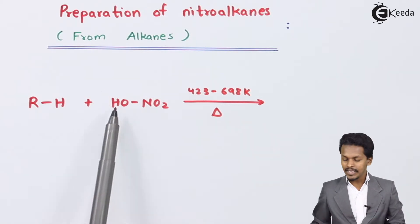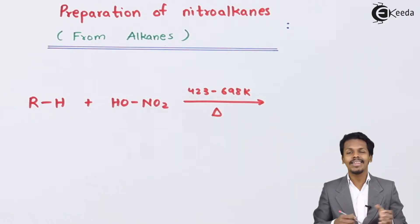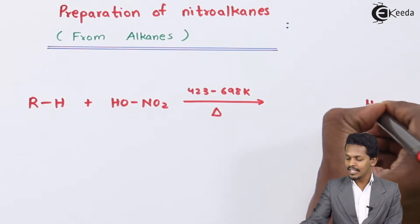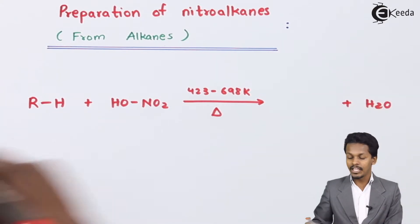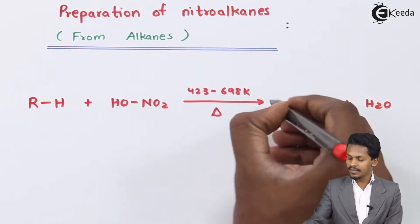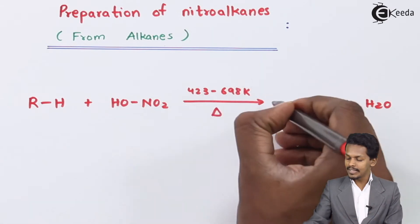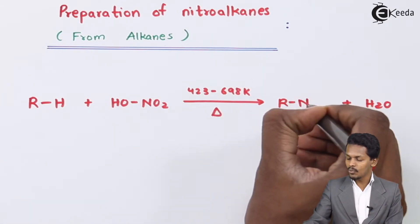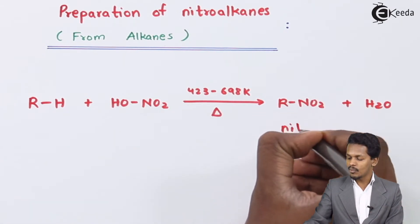By providing high temperature, the OH and H are removed in the form of water, that is H2O. The remaining part — the main product we need — is RNO2, that is known as nitroalkane.